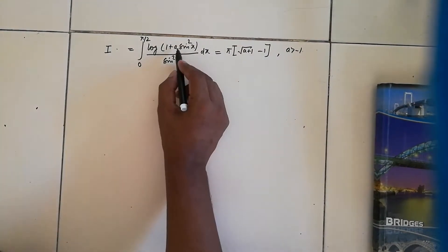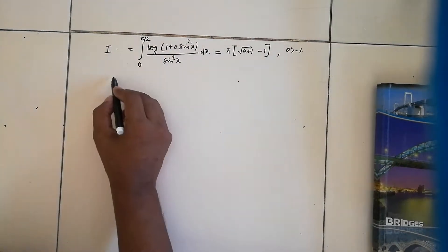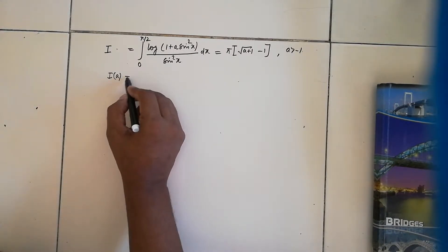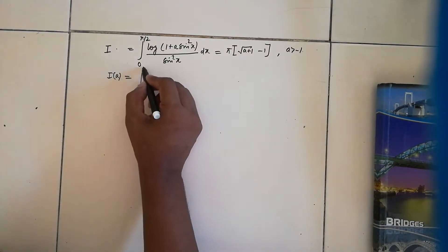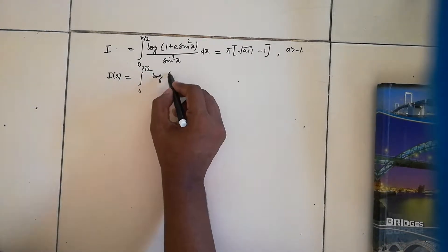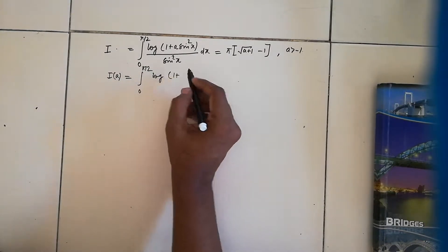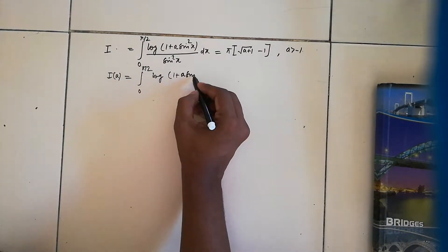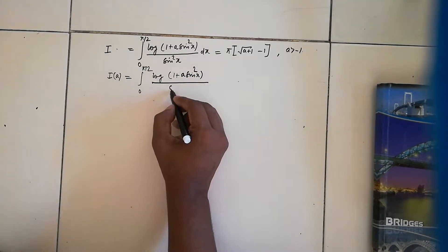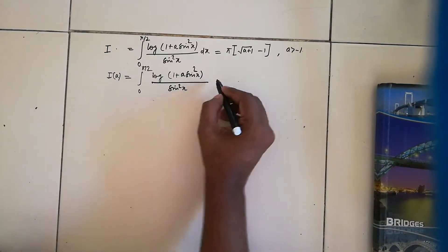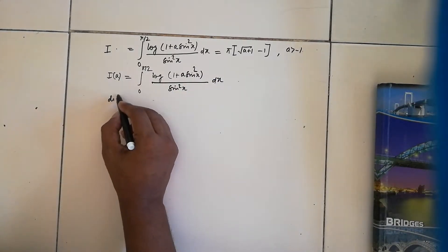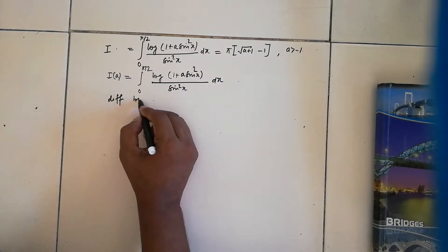Since our parameter is a, I will write I(a) as the integral from 0 to pi/2 of log(1 + a·sin²x) / sin²x dx.